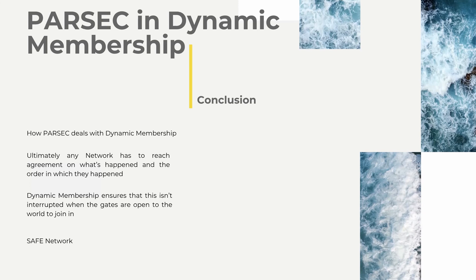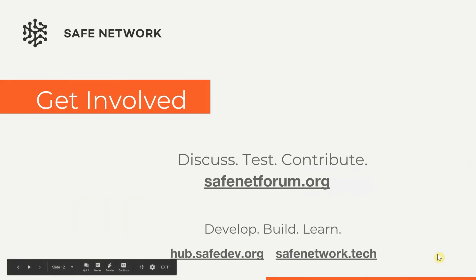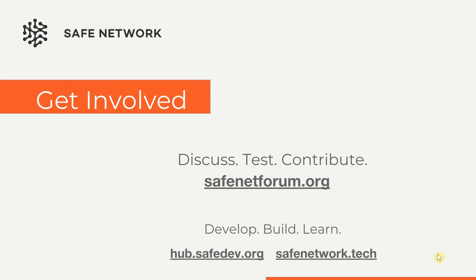So hopefully this video has been useful. Just to recap, we've run through how Parsec deals with dynamic membership — or in other words, the way that a decentralized network can enable nodes to join and leave at will without it affecting the process of reaching consensus about the order in which events take place on the network. Ultimately, any network has to reach agreement on what's happened and the order in which they happened. Dynamic membership ensures that this isn't interrupted when the gates are open to the world to join in. And it's that open, permissionless aspect of the safe network that's crucial to us in achieving our goal to build an inclusive, secure, decentralized and open platform for the world's data and communications. If you've got any questions, please give us a shout, either in the comments below or on the forum or on any of the usual social media channels. You'll find all the details below. Thanks for your time.